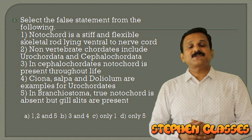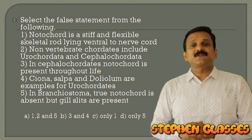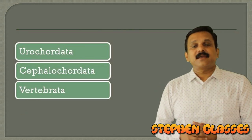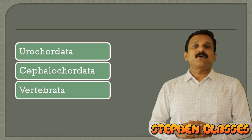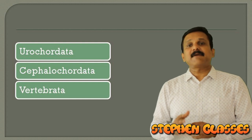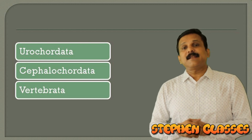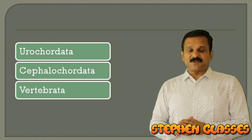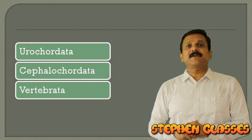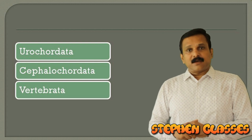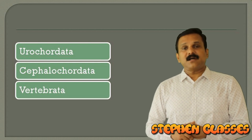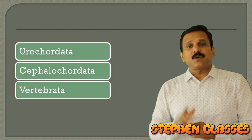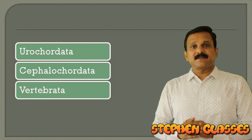Next question: select the false statement. You need a clear idea about chordate classification. Chordates have three subphyla: Urochordata (notochord present only in the larval tail; examples: Salpa, Doliolum), Cephalochordata (notochord persists throughout life; example: Branchiostoma/Amphioxus), and Vertebrata (notochord replaced by vertebral column in adult). Urochordates and cephalochordates are primitive chordates, also called Protochordata.